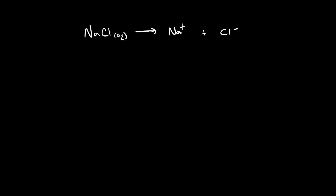The idea that each of these two ions are now available to react with other things is the basis of why some ionic compounds, when dissolved in water, will create an acidic or a basic solution. Take, for example, sodium fluoride instead of sodium chloride. Sodium fluoride is also soluble in water, and when it dissolves, we create a sodium cation and a fluoride anion.